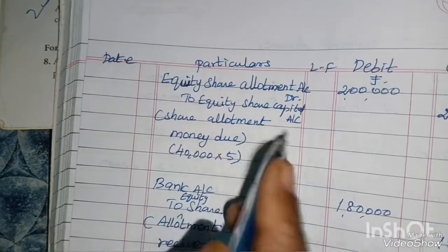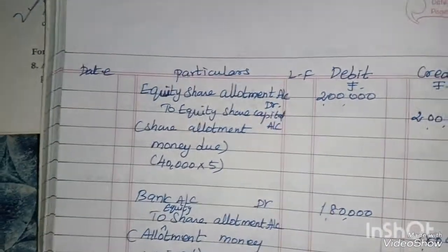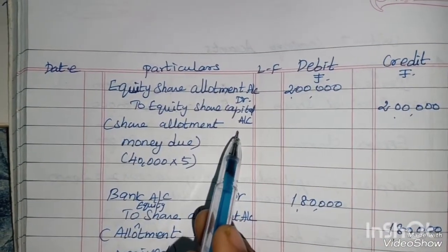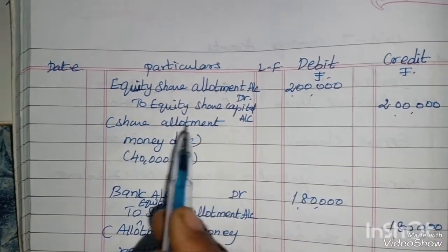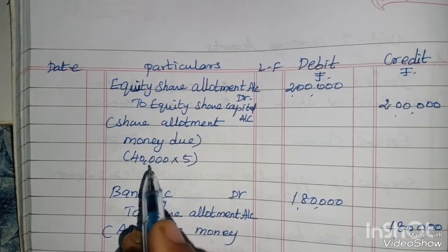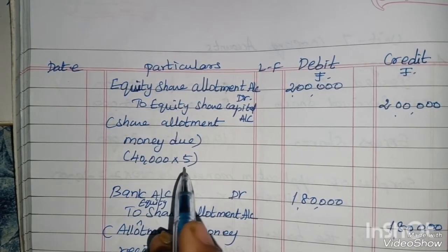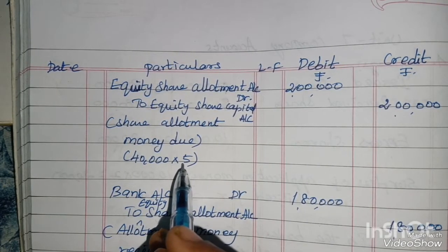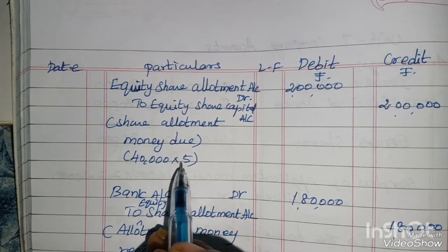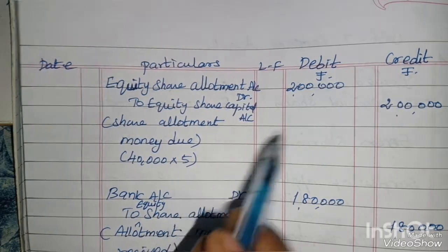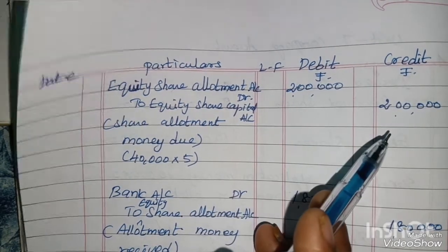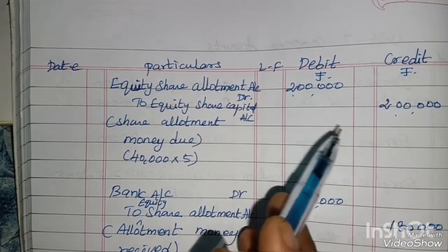Allotment entry: Equity share allotment account debit to equity share capital account. Share allotment money due: 40,000 shares into Rs.5 equals Rs.2,00,000. Debit and credit is Rs.2,00,000.